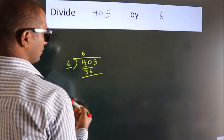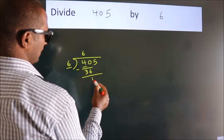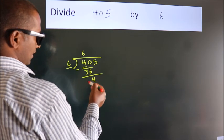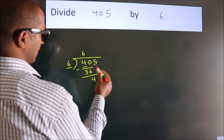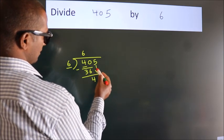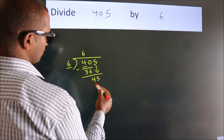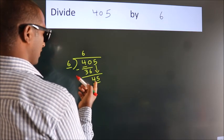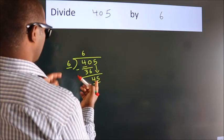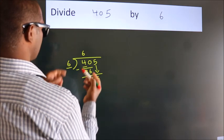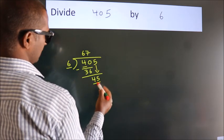Now we should subtract. We get 4. After this, bring down the beside number. So 5 down. So 45. A number close to 45 in the sixth table is 6 times 7, 42.